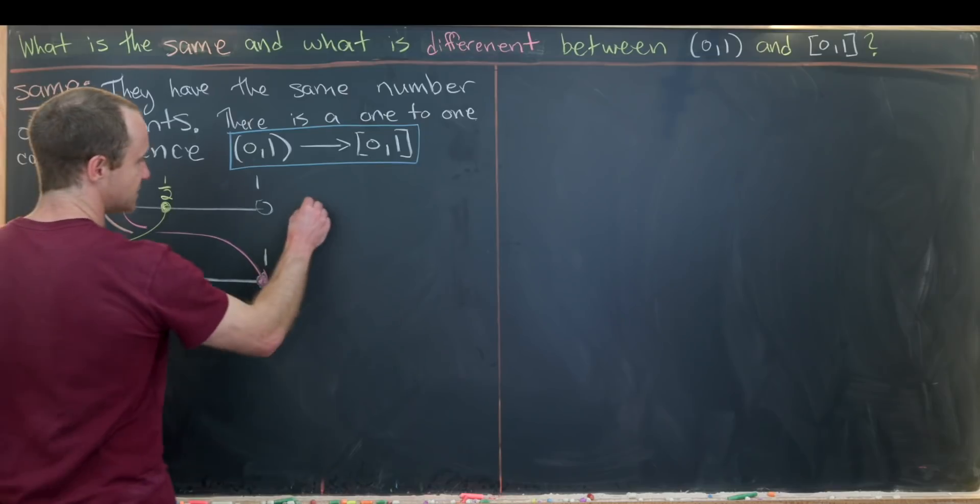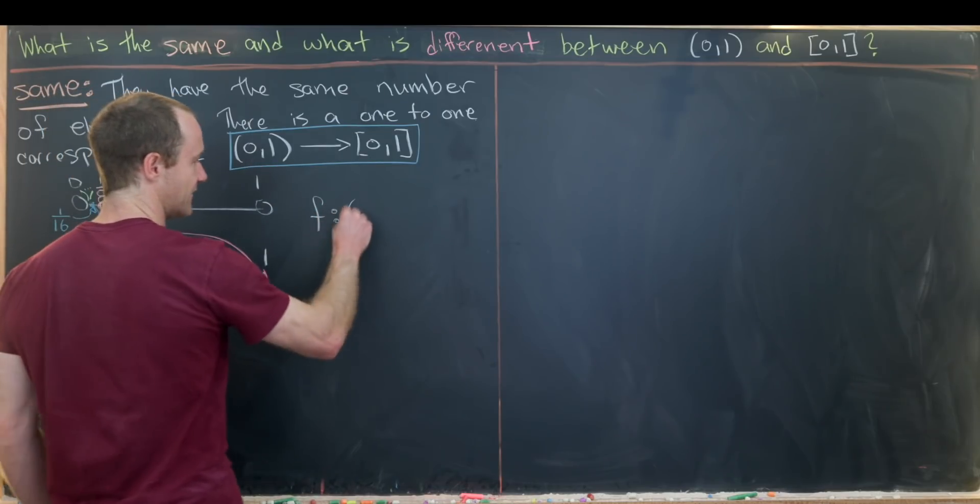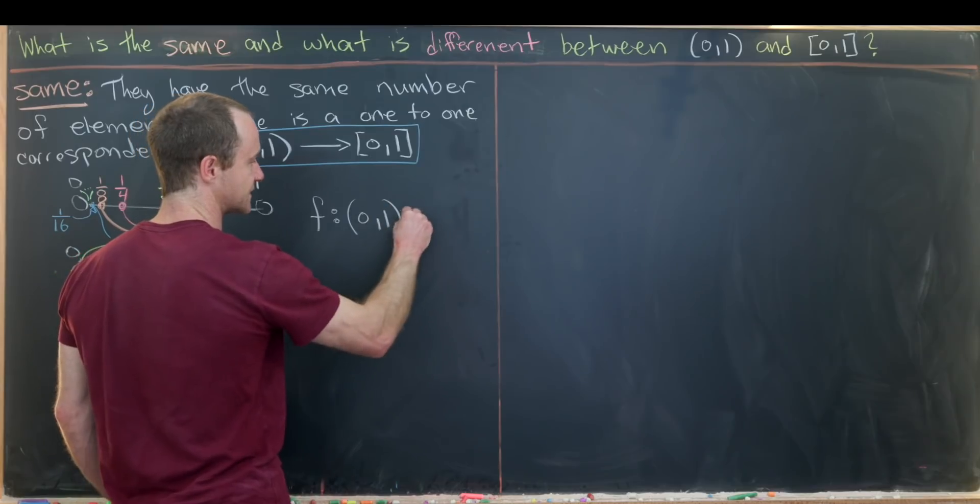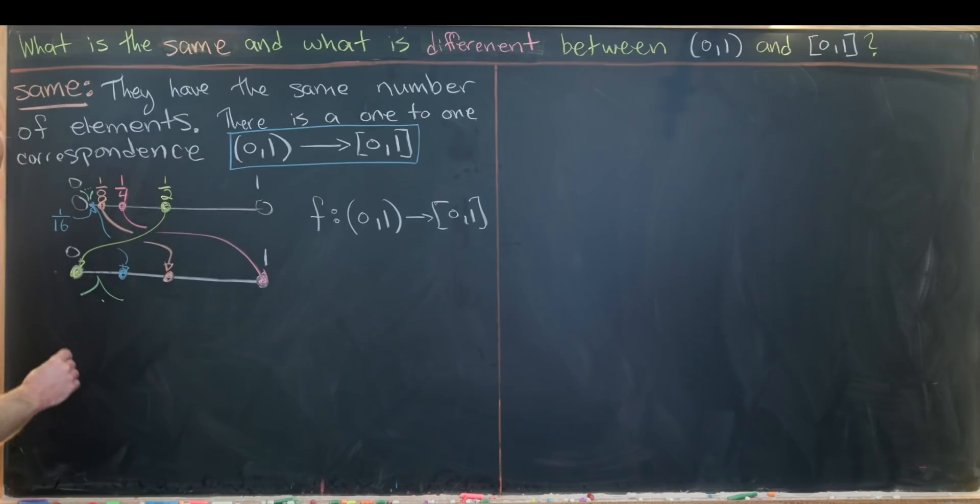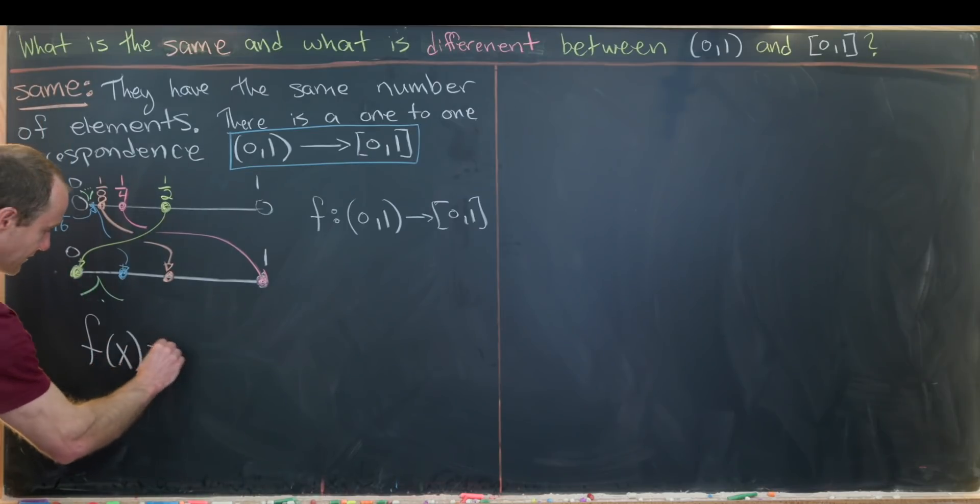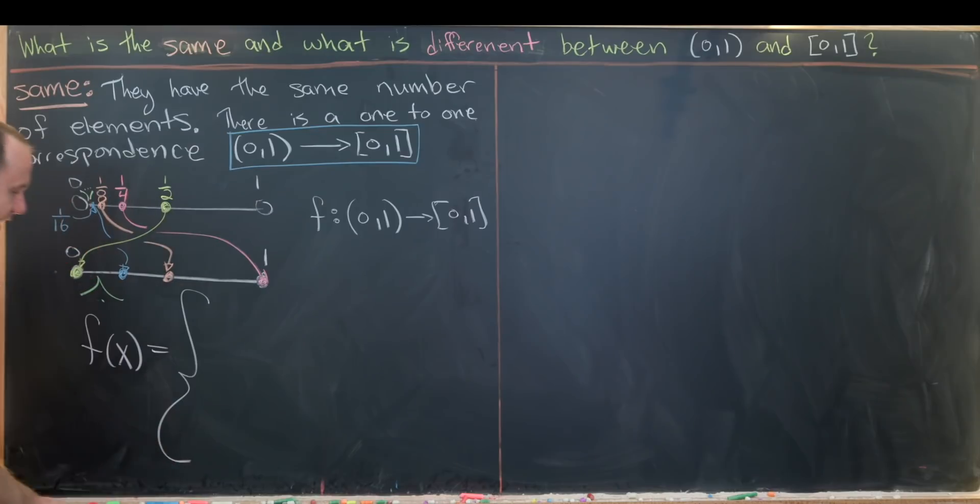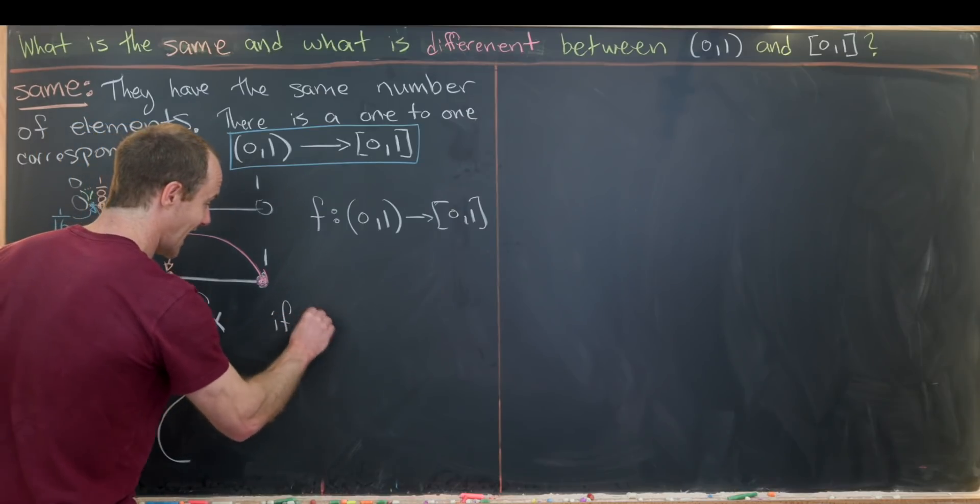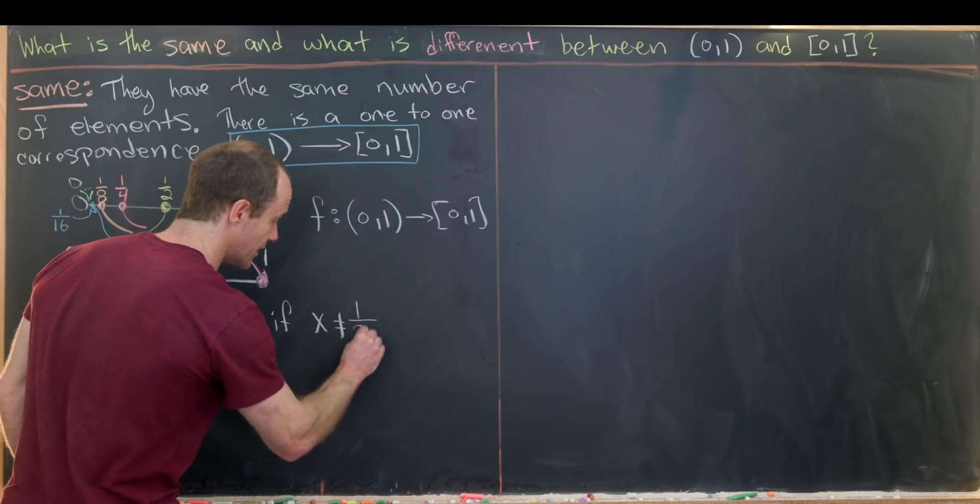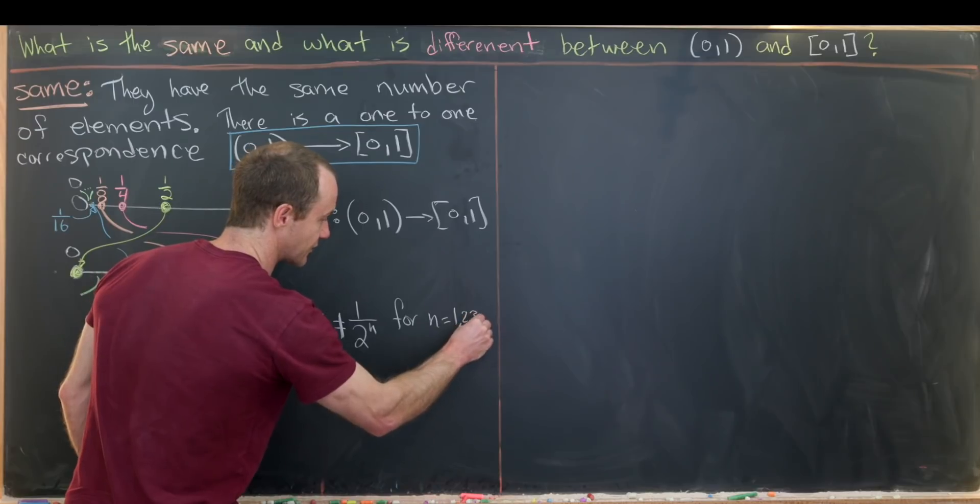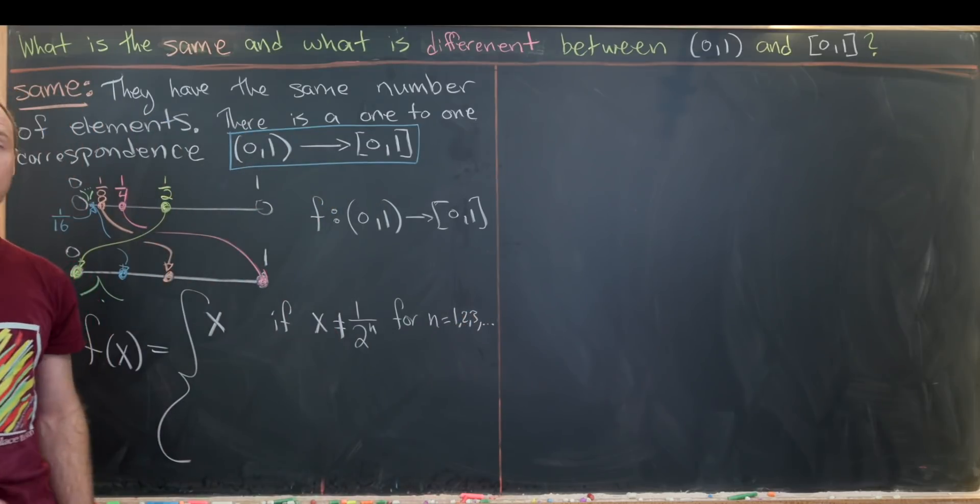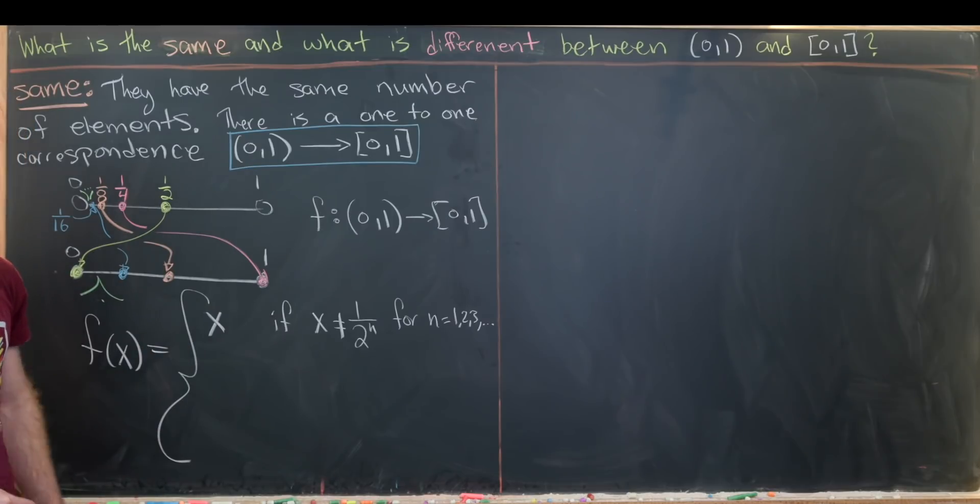So we'll define our function. I'll call it f. It goes from the open interval (0,1) to the closed interval [0,1]. And it'll be defined in the following piecewise manner. So f(x) will be equal to x itself. So it's the identity function. If x is not equal to 1 over 2^n for n equals 1, 2, 3, dot dot dot. So in other words, for n being a natural number or a positive integer.